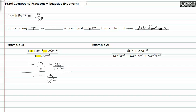Notice that the highest exponent in my denominator is x squared. So I'm going to multiply everything in my numerator by x squared and everything in my denominator by x squared. It's like multiplying by a funny-looking one. When I distribute that x squared, the denominators in my fractions, both in the numerator and the denominator, will divide out.